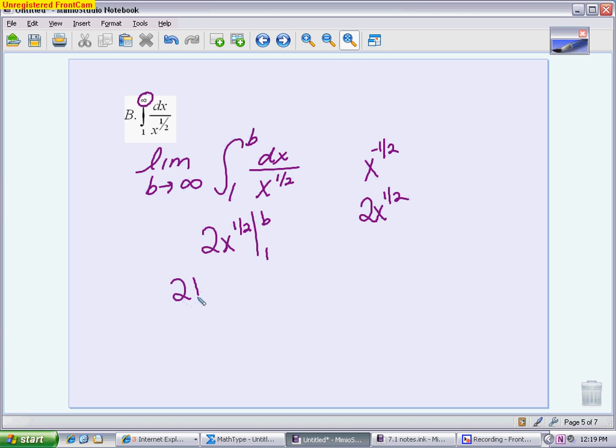Put my boundaries in, so I get 2b to the 1 half minus 2 times 1 to the 1 half. This part's just going to be minus 2. Now I want to see what happens as we go to infinity. If I take the square root of a number that keeps getting larger and larger, it keeps getting larger and larger. So this piece will be infinity. It does not matter that I'm subtracting 2 off of it. I still get infinity, so this one, like the last one, is a diverging improper integral and still not the answer that we're looking for on this multiple choice question.